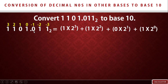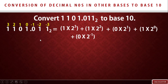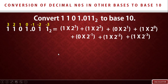Now we are left with the decimal fraction part. We take 0 multiplied by the base raised to the power, which here is minus one: plus 0 times 2 raised to power minus one. Then plus 1 times 2 raised to power minus two, and plus 1 times 2 raised to power minus three.